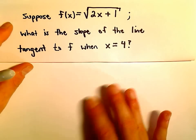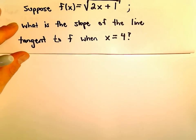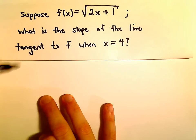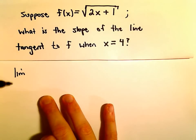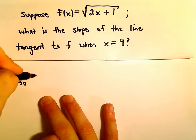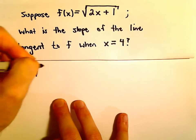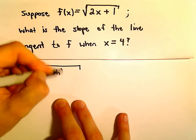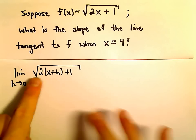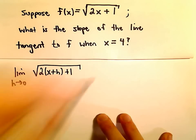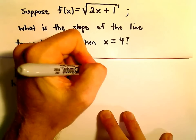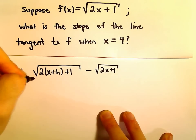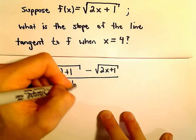We've seen how to find slopes of tangent lines — we need to compute the derivative. So we'll have the limit as h approaches 0, and we take f of x plus h, which if we replace our x with x plus h, we just have 2 times the quantity x plus h plus 1, and then we do minus our function f of x, which is the original function, square root of 2x plus 1. That's all over h.